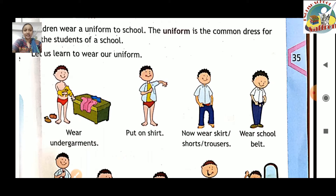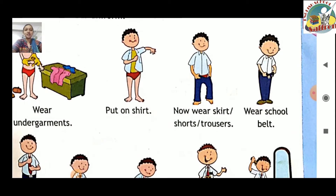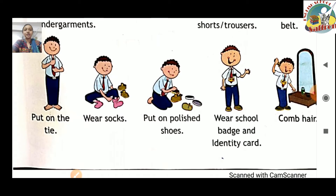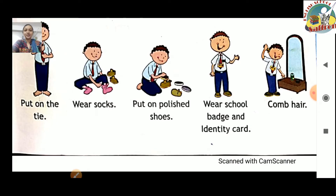Let us learn to wear our uniform. First, wear undergarments — pehle humen undergarments wear karne hain. Then put on a shirt. Third, wear skirt, shorts, or trouser — aapki uniform mein skirt ho to skirt, shorts ho to shorts, trouser ho to trouser. Then wear school belt, put on the tie, wear socks, put on polished shoes, wear school badge, and put on your identity card — jo humen school mein se identity card mila hai usko pehanna hai. Yeh sab karne ke baad hi hum school jaenge.